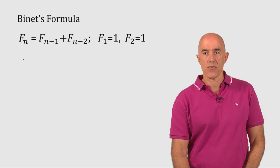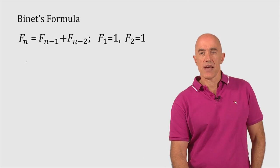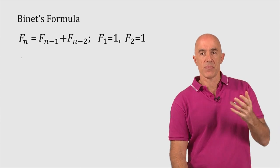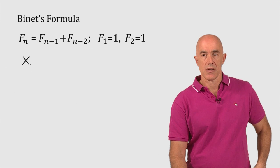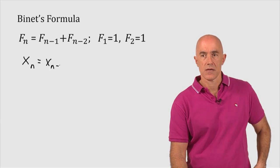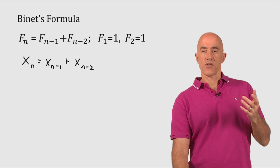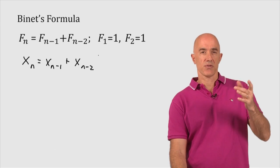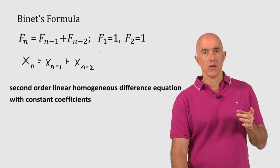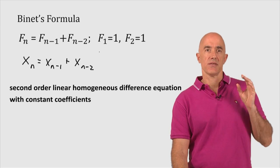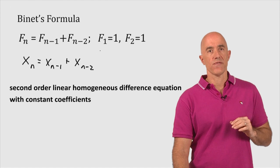So let me show you how we're going to do this. Rather than start with the equation for the Fibonacci numbers, let's start with a general equation: x_n equals x_{n-1} plus x_{n-2}. This equation has a special name. This is a second order linear homogeneous difference equation with constant coefficients.